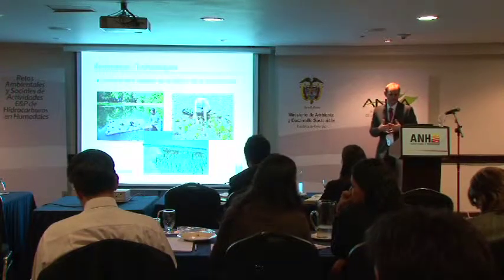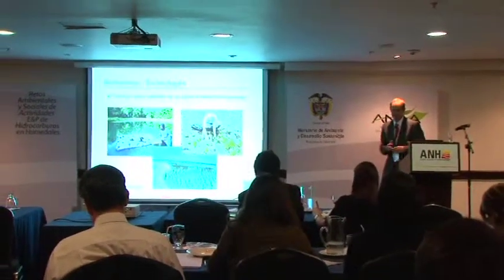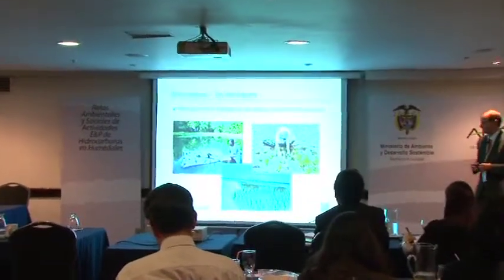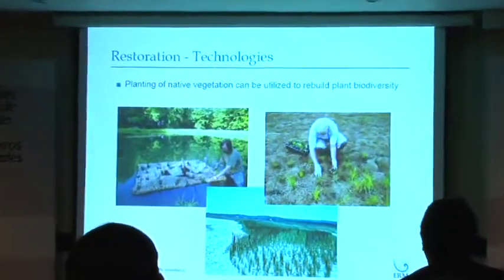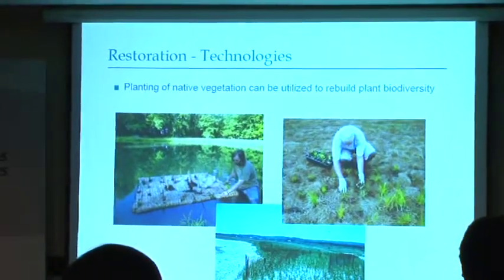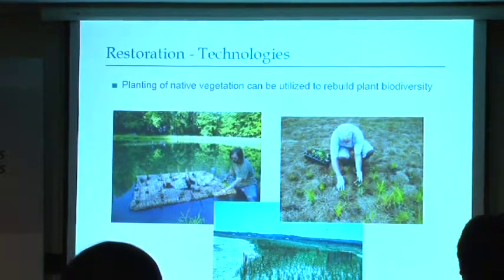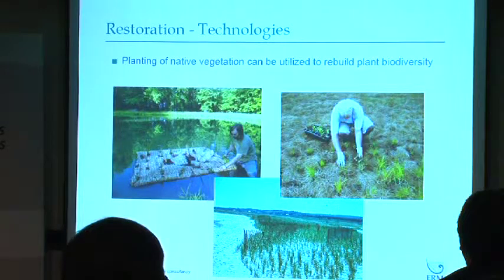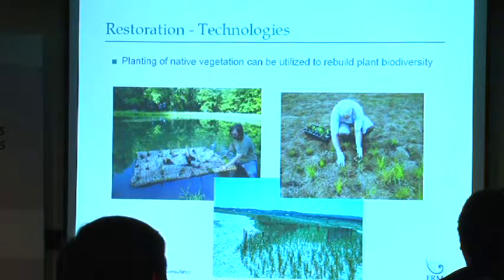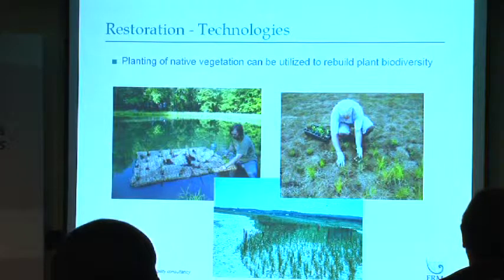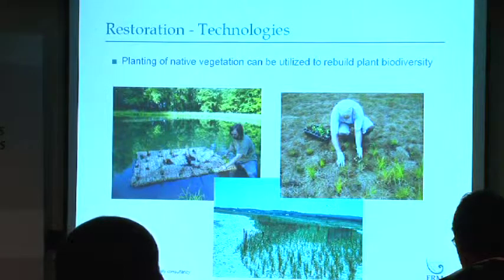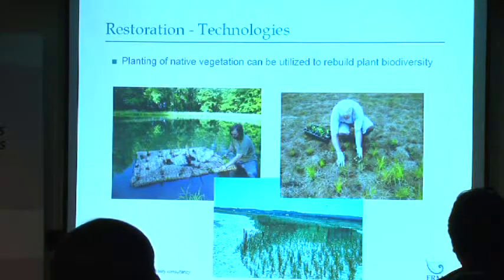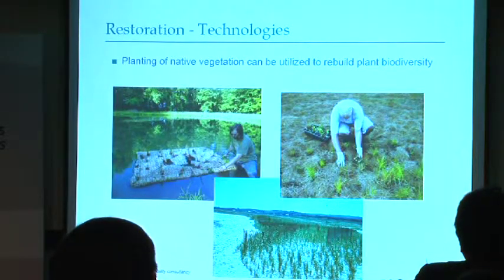Planting native vegetation is required to build biodiversity, and there are a lot of different ways to do that. This picture of a person in the water is actually planting plants on a floating mat — that will eventually become floating aquatic plants. The mat will decay once the plants grow, and you'll get the mat out of there. Planting grasslands and plants is a tedious business. It's basically a manual operation; there are very few automated systems you can use to plant and restore wetlands, grasslands, or forestlands.